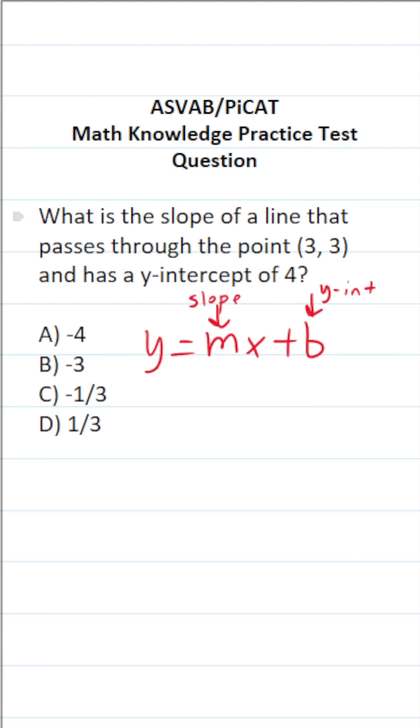x and y you can get from your ordered pair. Again, ordered pairs come in the form (x, y). So in this case, I know x is 3 and y is 3.